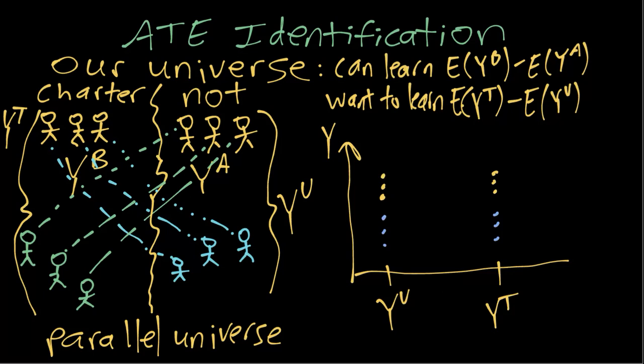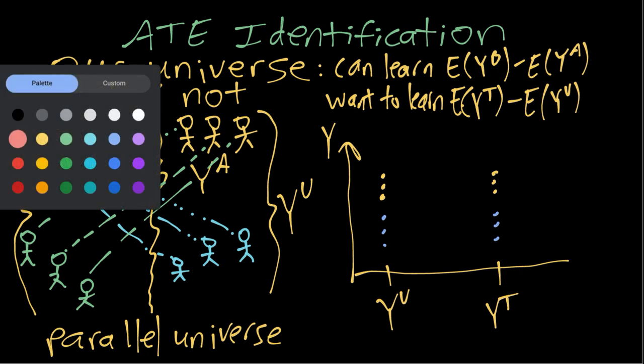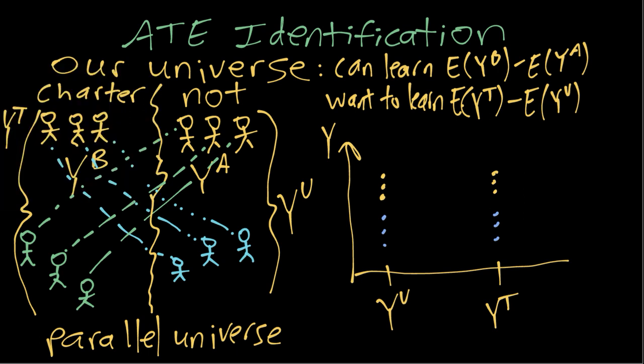So if we were able to get a random sample of these and a random sample of these, then we could correctly estimate the averages of the two and correctly estimate the average treatment effect.